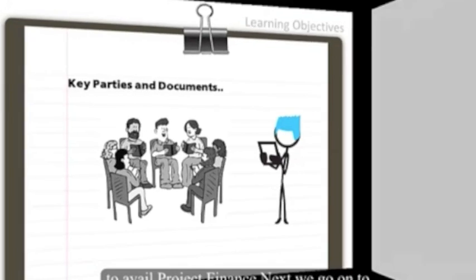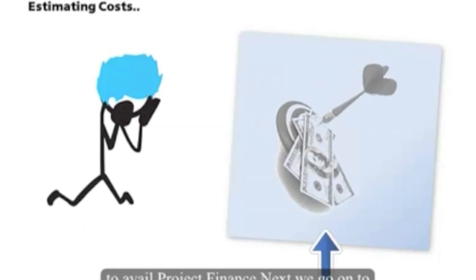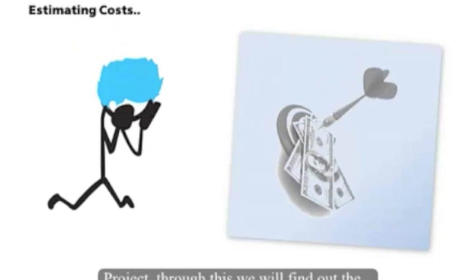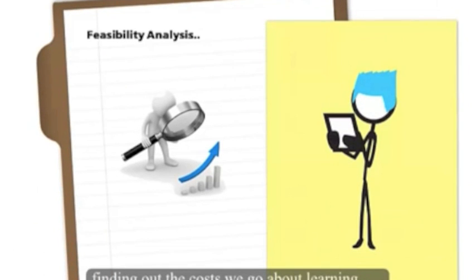Next we go on to estimate the various cost elements of the project. Through this we will find out the total outlay associated with the project. After finding out the cost, we go about learning a very important part of project finance which is to conduct a thorough appraisal or feasibility check of the project.